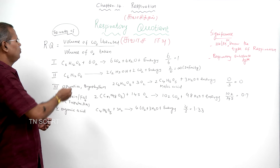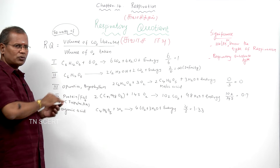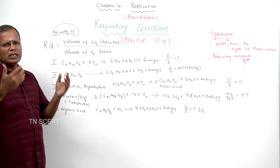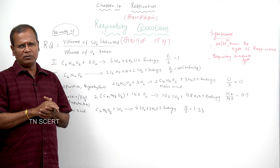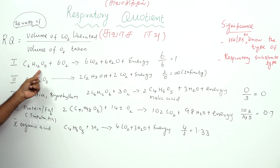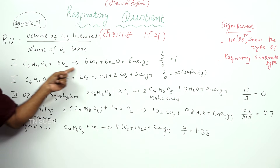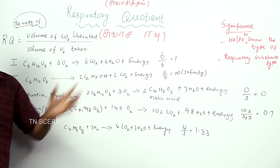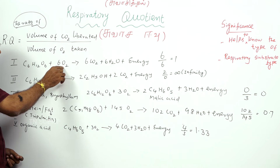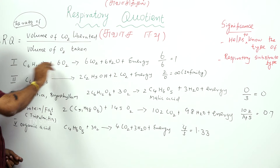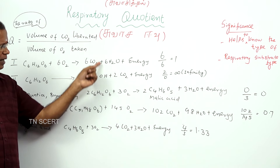The respiratory quotient of carbohydrate — glucose — in aerobic respiration: six molecules of oxygen are consumed and six molecules of carbon dioxide are liberated.